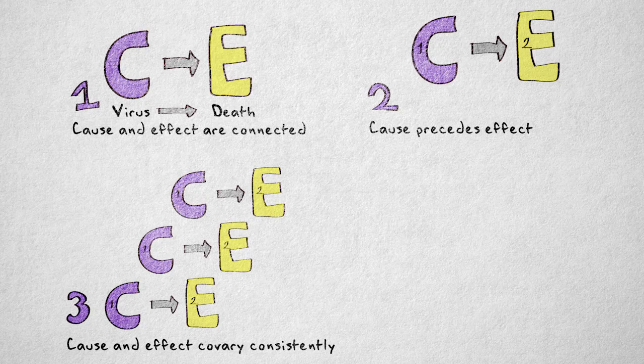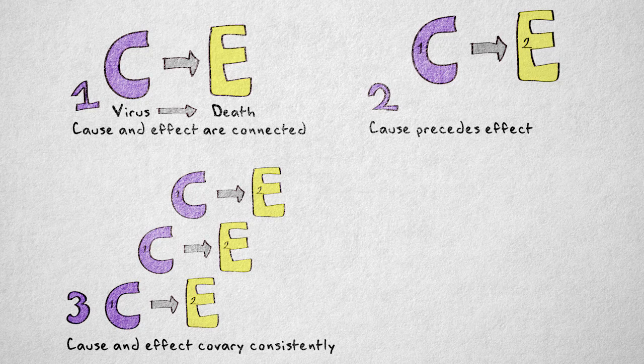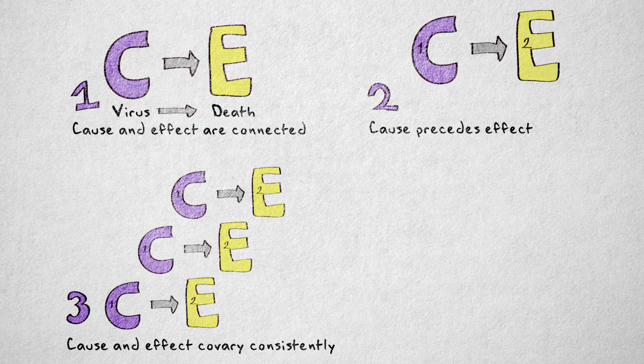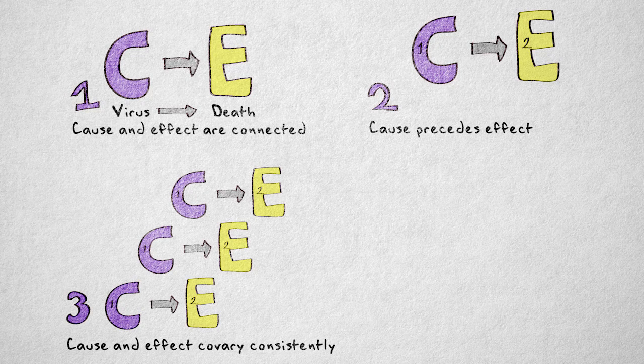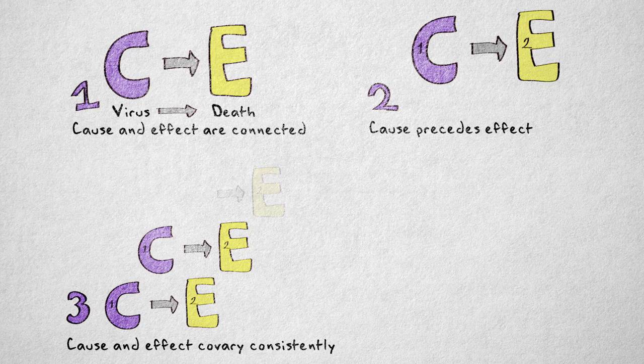Number three, the cause and effect occur together consistently. This means cause and effect should go together, or co-vary. When the cause is present, we should see the effect. And if the cause is not present, then the effect should be absent.